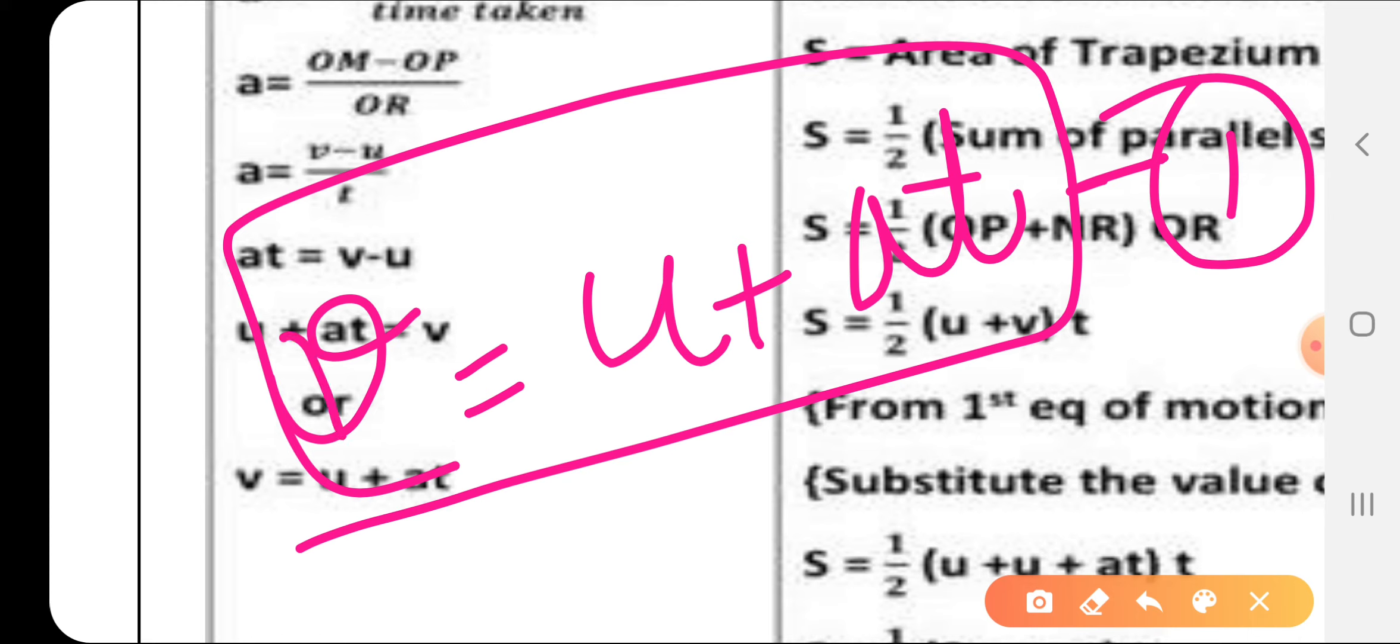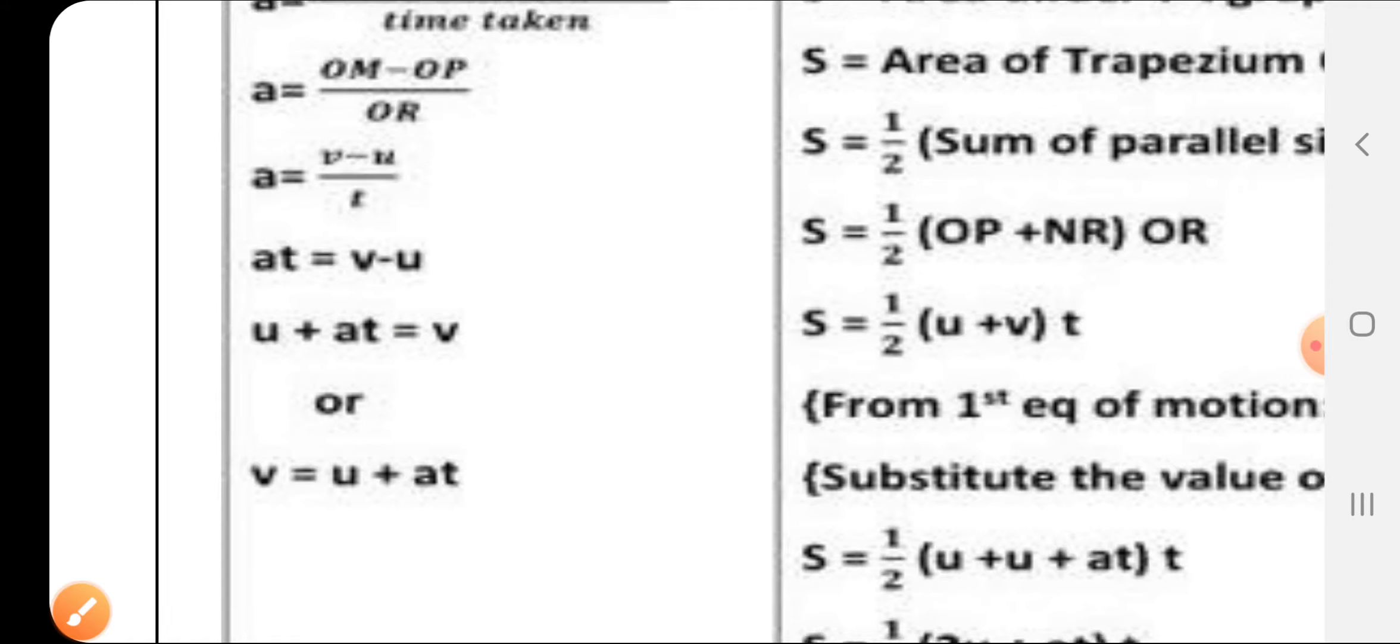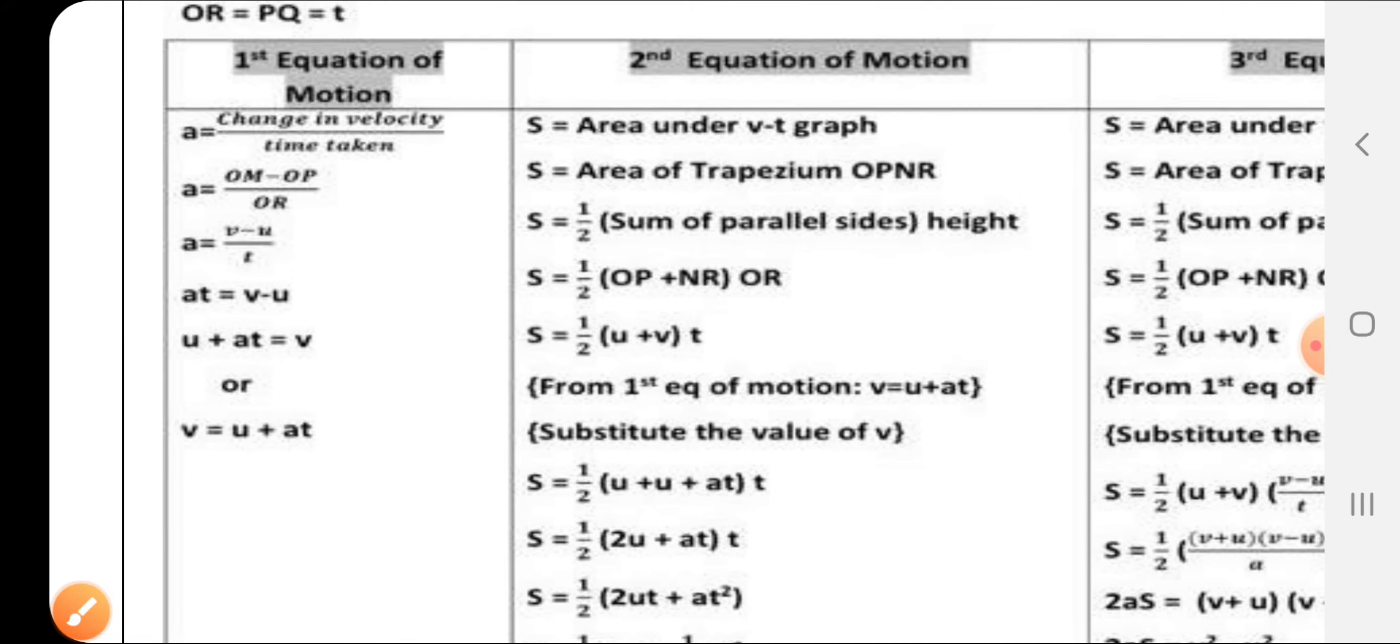This is my first equation. This is known as the velocity-time relation. Simply, we applied the acceleration formula, found the change in velocity (OM minus OP upon OR, that is the time taken), and we got our first equation in a very simple way.